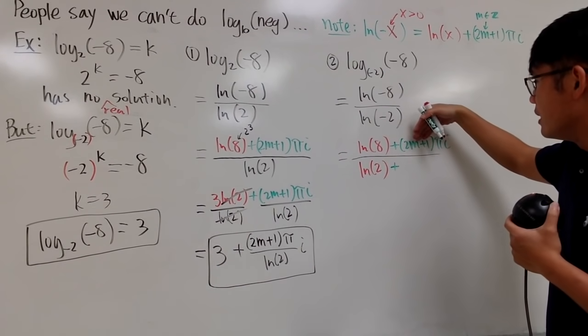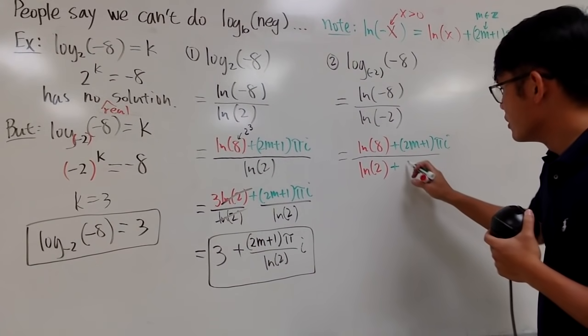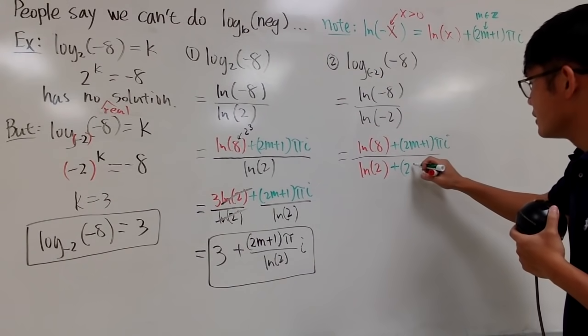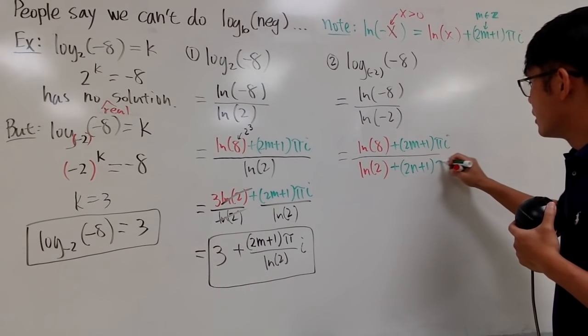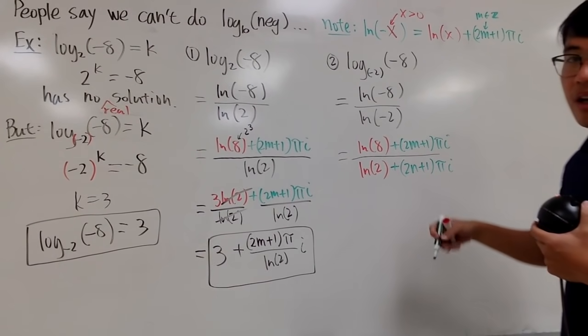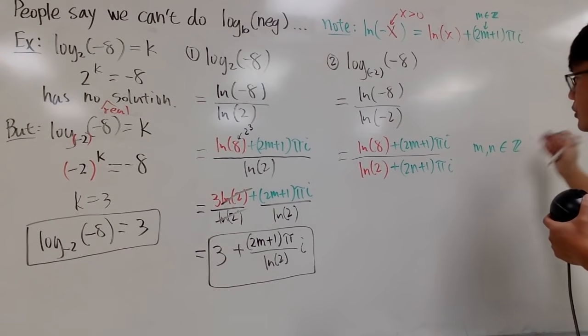Technically, you can because maybe this and that are equal to each other. But, in general, it's not true. So, we will have to use, let's say, 2. We use k already. Let's use n. Plus 1. Pi i. So, again, the m and n, they are just integers. So, here, I'll just indicate m and n are integers.